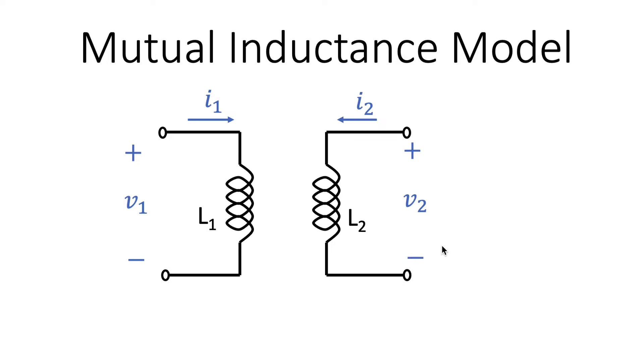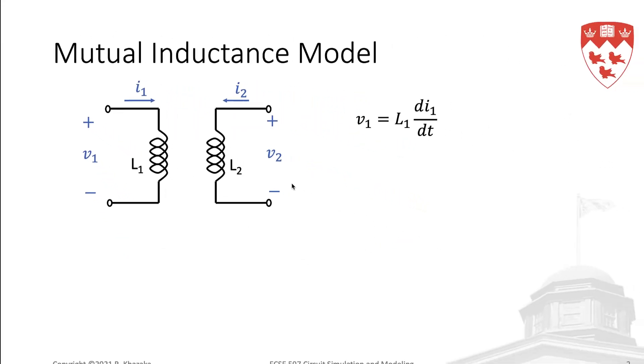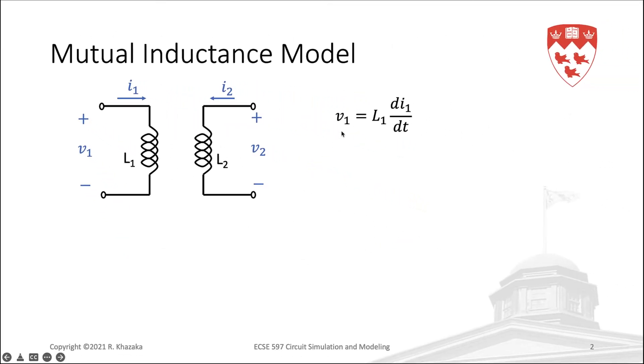So for inductor L1, we have V1 equals L1 dI1 by dt. In other words, a change in I1 will induce a voltage across L1 due to its self-inductance. And we can do the same for inductor L2, where a change in the current I2 induces a voltage V2 across L2.